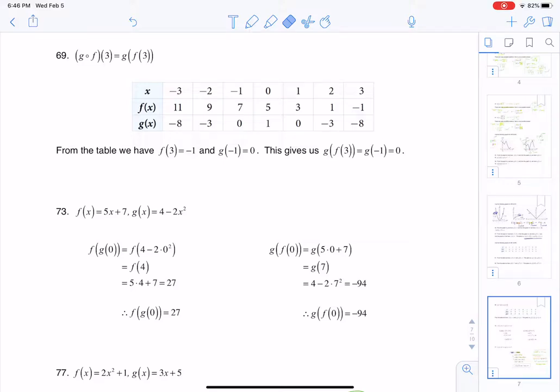Hey, Math 31, I had a question coming out of section 3.4, number 69, and this is when we were asked to find G of F of 3. When they put that open circle like that, it's really saying G of F of 3.